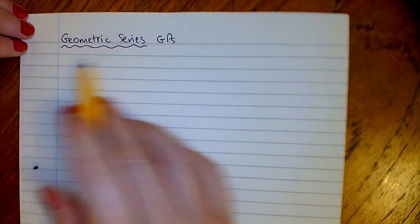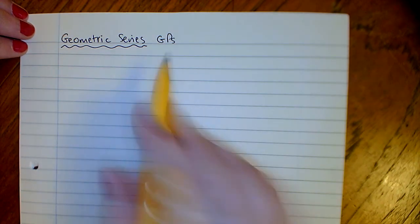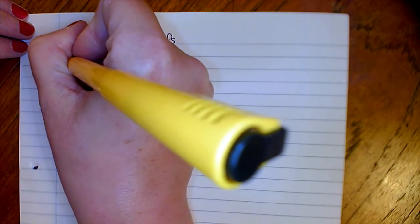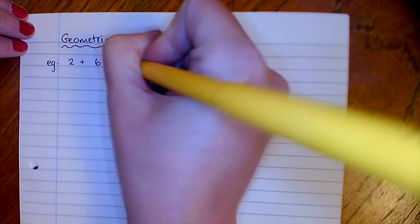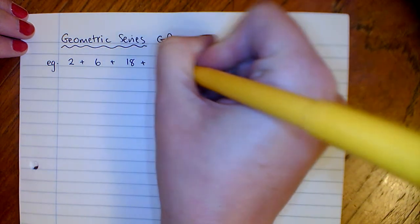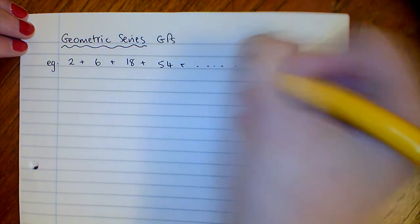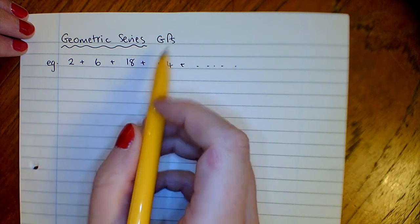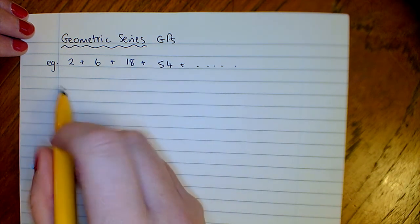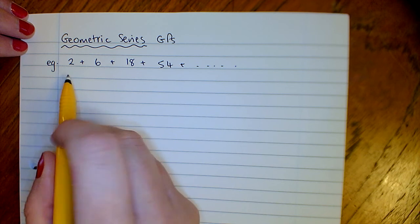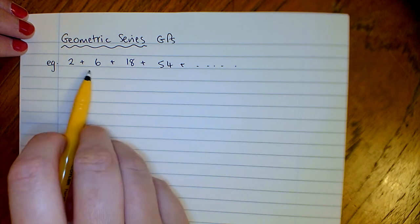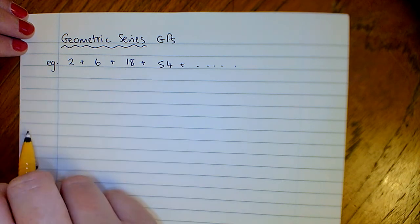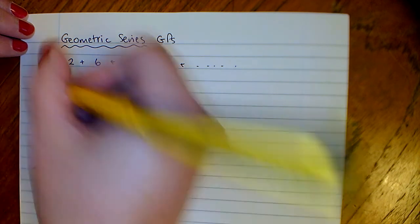Looking this time at geometric series, or GPs, geometric progressions. An example of a geometric series would be something like 2 plus 6 plus 18 plus 54, etc. This time we've got a common ratio. In APs we had a common difference, and in GPs we have a common ratio. You can see we have to multiply each term by 3 to get the next term.